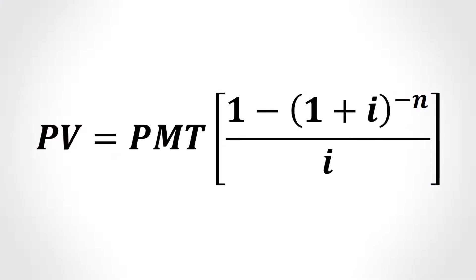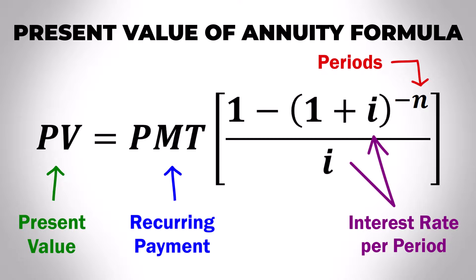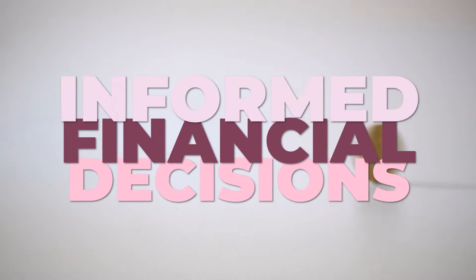As you can see, the present value of a loan is simply the current worth of all future cash flows, considering the time value of money. By using the present value of annuity formula, we can precisely calculate this value, enabling us to make informed financial decisions when taking on debt.